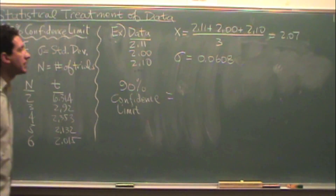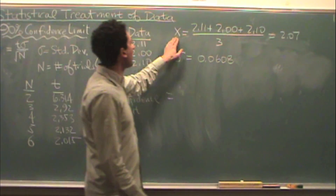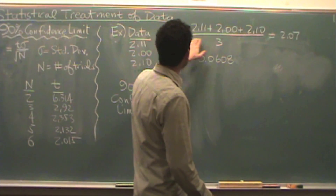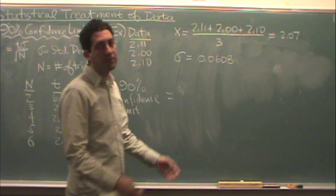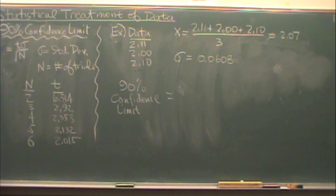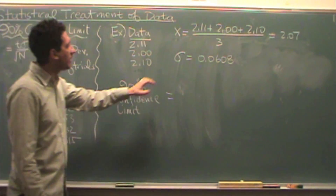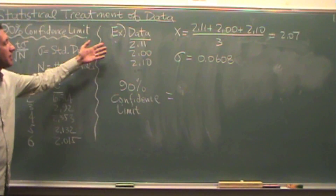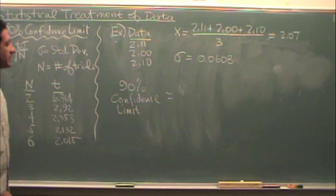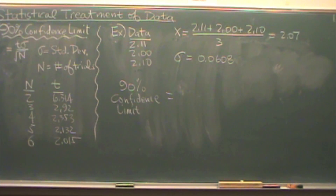I've got a couple of random data points. I found x̄ — that's the average — from a previous video where we talked about standard deviation. And I've already found the standard deviation for us based on these data. Now, for the task at hand, finding the 90% confidence limit, that's what we want to focus on.